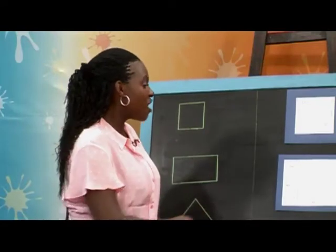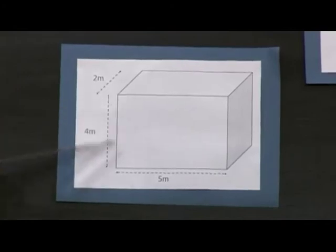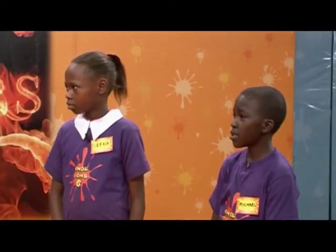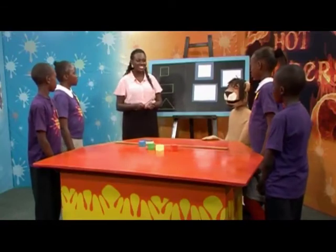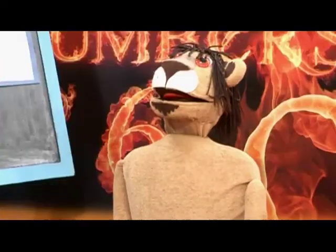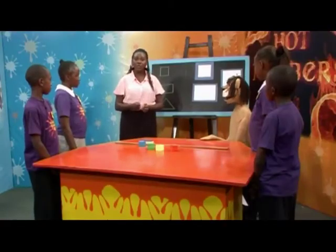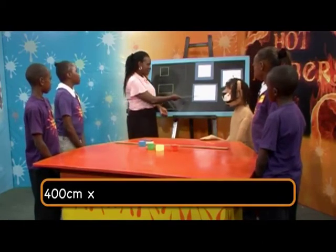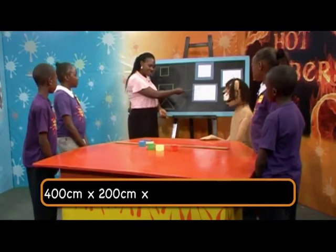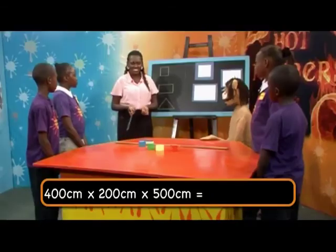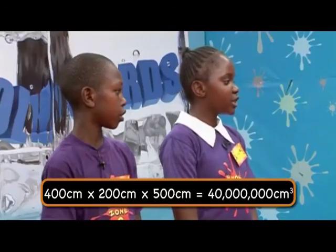Now, if our cuboid measures 4 meters by 2 meters by 5 meters, what is the volume of our cuboid? Yes, Michael? 40 cubic meters. Very good. Now, what about in cubic centimeters? Teacher Pendo? Yes, Marara? I think we multiply that by 1 million. Yes. Or we change the meters to centimeters and get 400 centimeters multiplied by 200 centimeters multiplied by 500 centimeters, which gives us 40 million cubic centimeters.